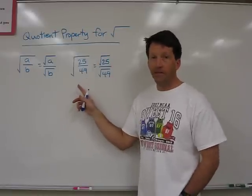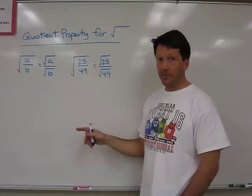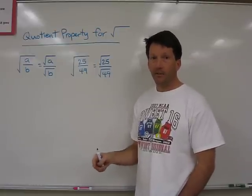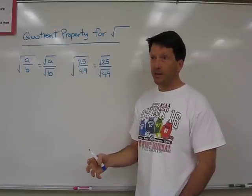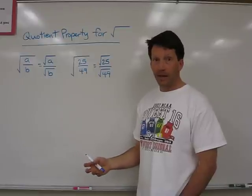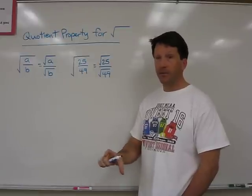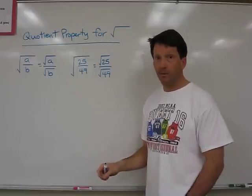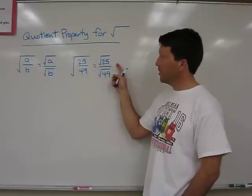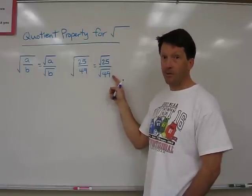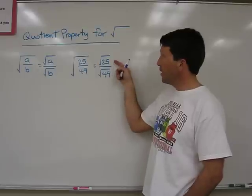An example would be the square root of 25 over 49. Thinking of 25 over 49 as one fraction, I don't really know what the square root of that is, but if I split those up into two separate square roots, the square root of 25 over the square root of 49, now I know what each one is.